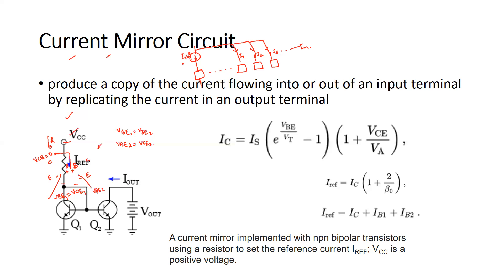This same current gets copied into the other part of the circuit. Q2 is able to maintain a high output resistance, which helps keep the output current flowing through it constant regardless of the load condition — irrespective of how much current the load draws.